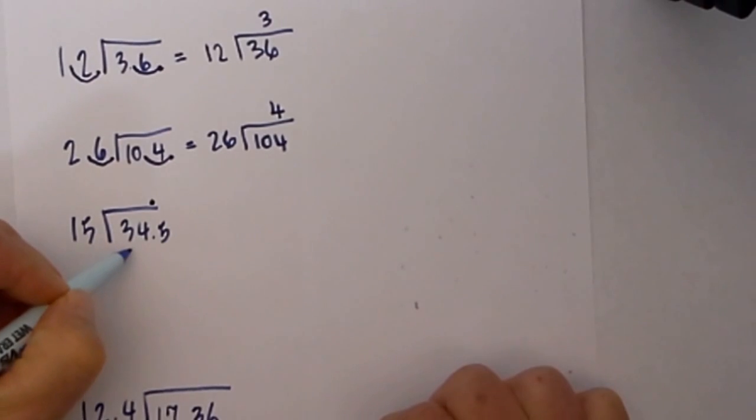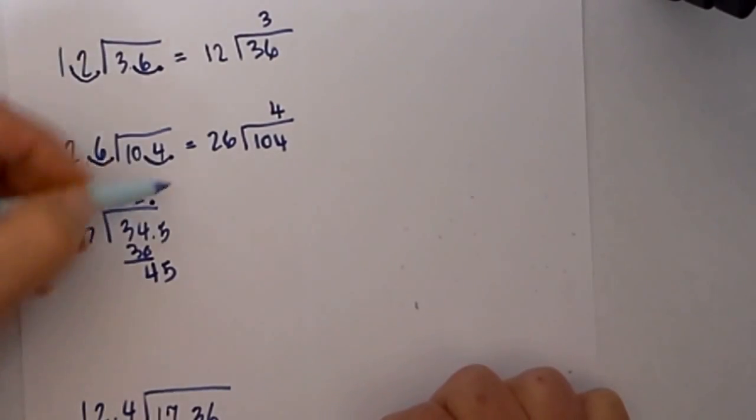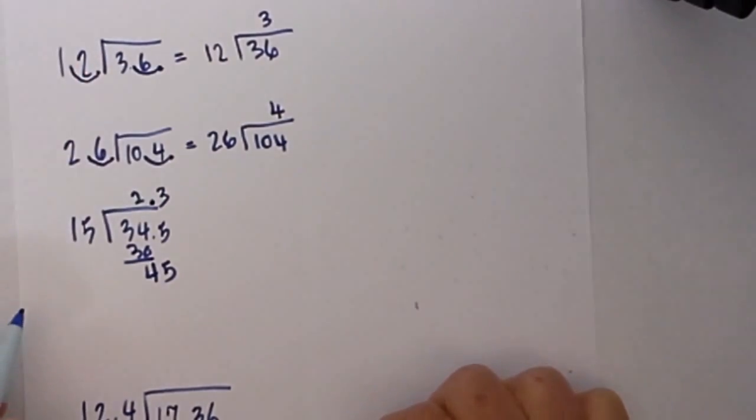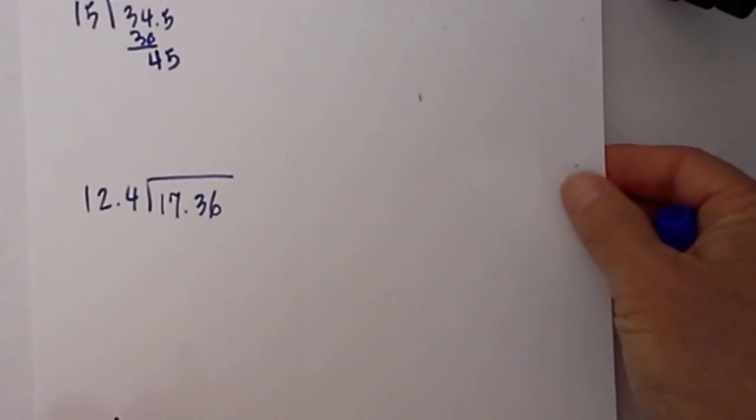15 will go into 34 two times, and 2 times 15 is 30. Bring down the 4, so now we have 45. 15 into 45 will go 3 times, so that becomes 2.3. And finally, let's move down to the next one.